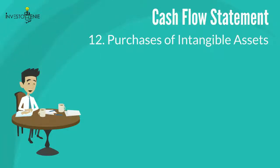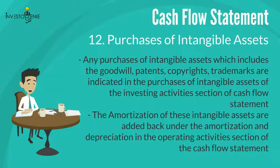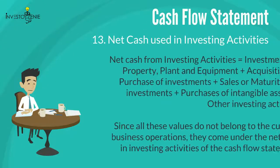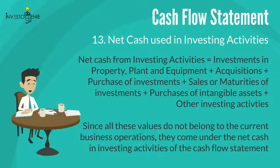Twelve: purchases of intangible assets — any purchases of intangible assets including goodwill, patents, copyrights, and trademarks are indicated in the investing activities section of the cash flow statement. The amortization of these intangible assets is added back under amortization and depreciation in the operating activities section. Thirteen: net cash used for investing activities is the total sum of investments in property, plant and equipment, acquisitions, purchases of investments, sales or maturities of investments, purchases of intangible assets, and other investing activities. Since these values do not belong to current business operations, they come under net cash from investing activities.